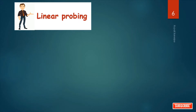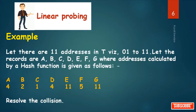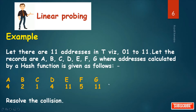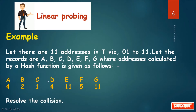We will first learn linear probing with an example. Let there be 11 addresses in table T, a memory table, with addresses from 01 to 11. Let the records be A, B, C, D, E, F, G, where the address is calculated by a hash function. A is stored at location 4, B at location 2, C at location 1, D also at location 4, E at location 11, F at location 5, and G also at location 11.